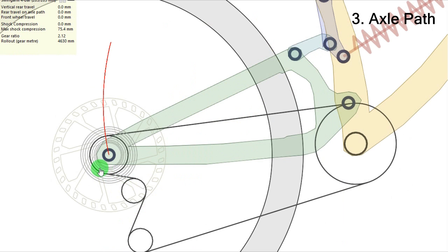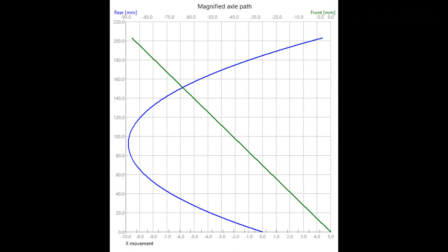So the axle path is a traditional arc. Nothing special with it. You have here the magnification of the axle path.